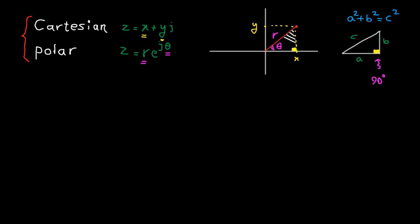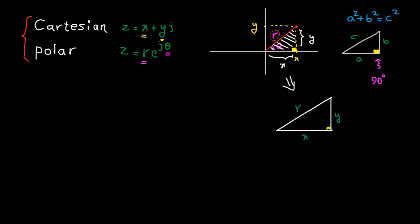Now let's look at this triangle. This is x and this is y. Let me plot it again — x and y and here is r. As this angle is 90 degrees, we can use this formula: x squared plus y squared is equal to r squared. That's the relation between x, y and r.